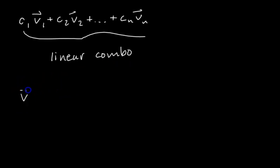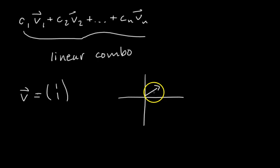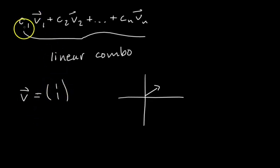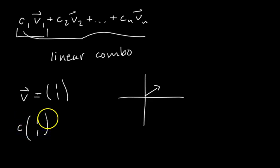Let's consider one vector v equal to [1, 1]. It's a vector in R2. Geometrically, we have the vector looking like this. We want to consider what are all the possible linear combinations we can get of just this one vector — whatever that is will be the span of v. The general form of a linear combination of just one vector is some scalar C times [1, 1].